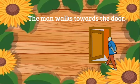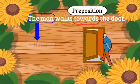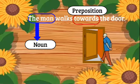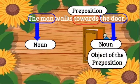The man walks towards the door. So here we have our preposition towards, connecting our noun, the man, to another noun — the door. The door being our object of the preposition. So where the man is in relation, where he's going, in relation to the door. Our preposition shows us towards.